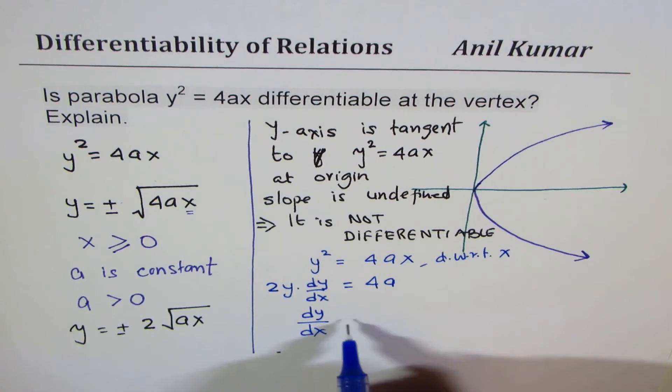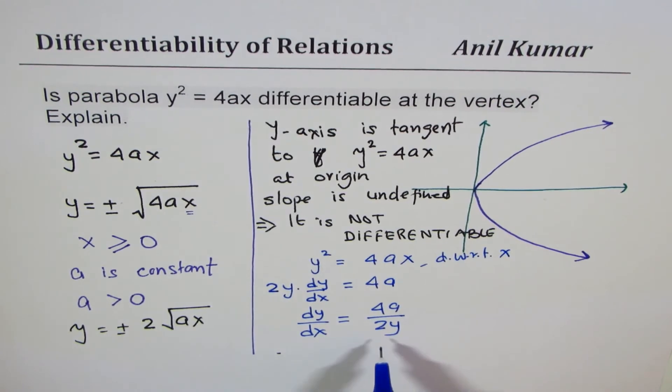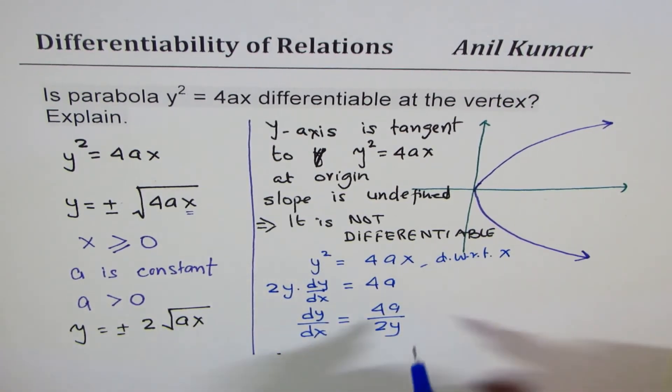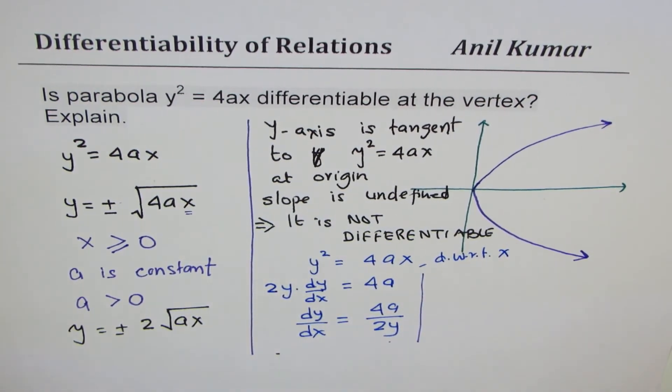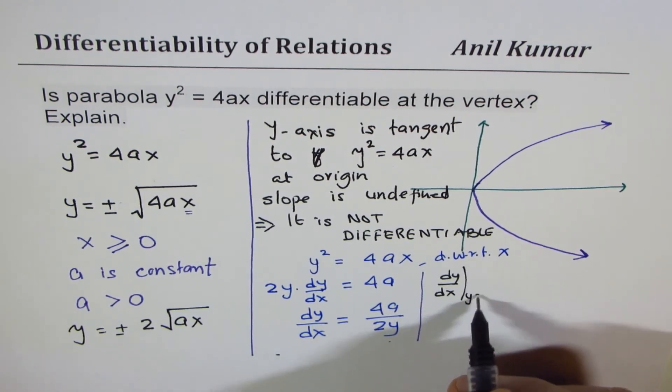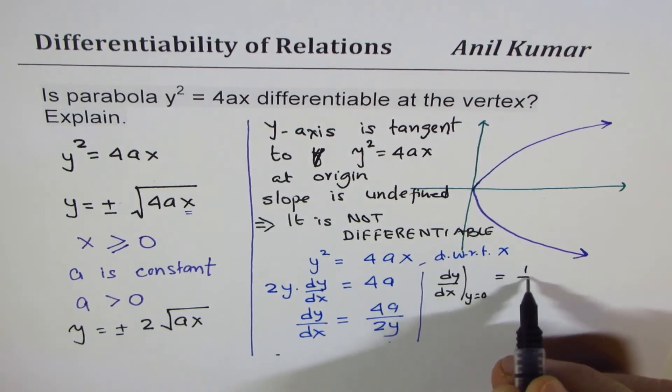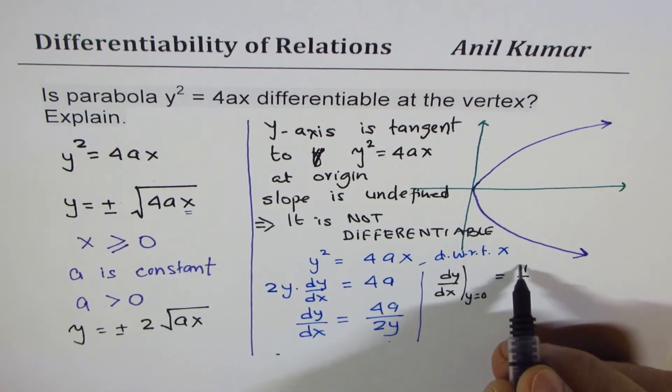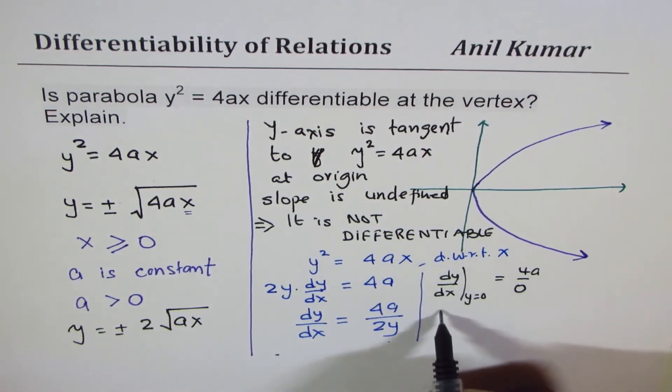At the origin, y = 0. So if you write dy/dx at y = 0, you get 4a/0, which is undefined.